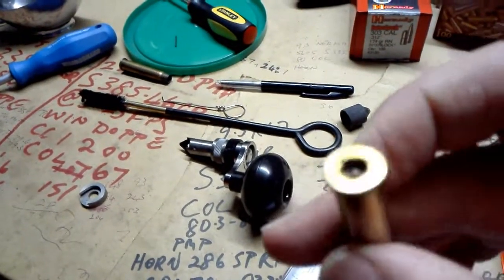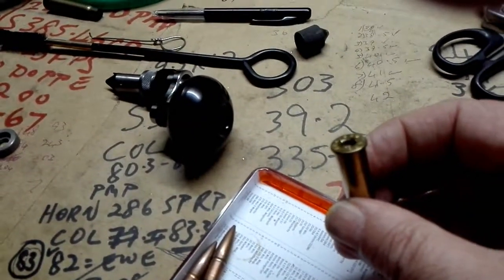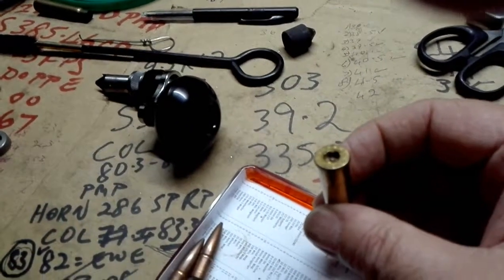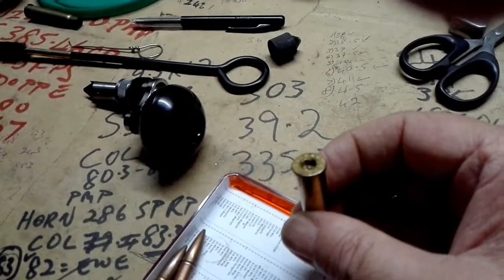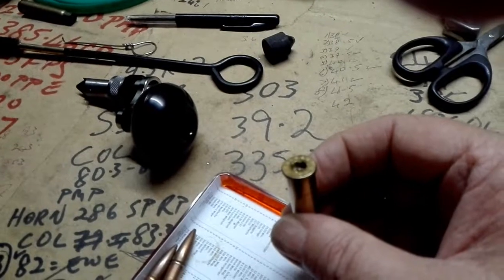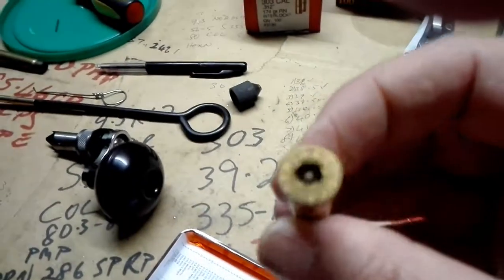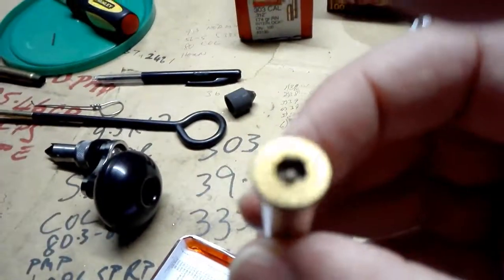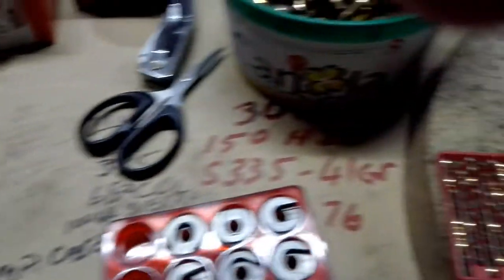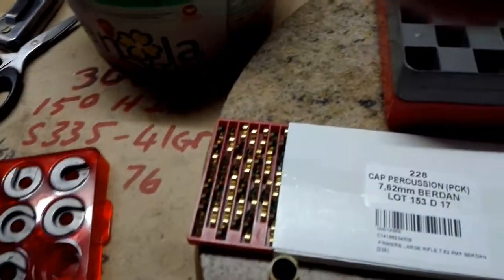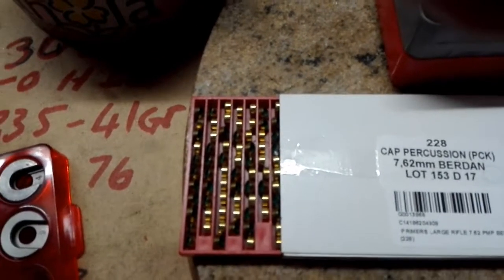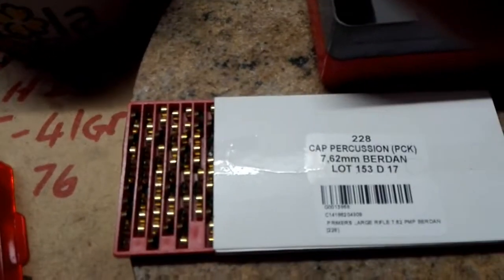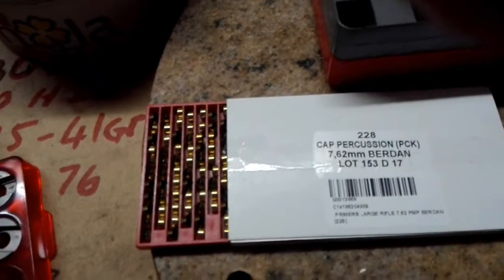You will see the anvil in the case there. That is what makes it different from Boxer primed cases. Boxer primers have got their own anvil built into the primer, whereas Berdan primed cases have got the anvil in the case. Here I've got Berdan primers. They are not that easy to come by, but luckily in South Africa we can still buy them, and therefore it's quite easy to recycle these cases and use them again and again.